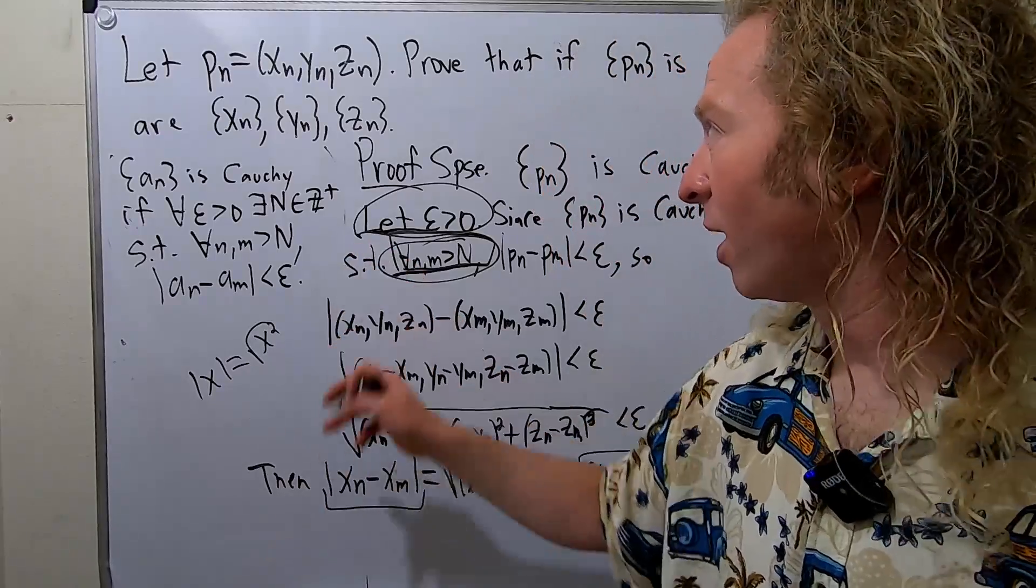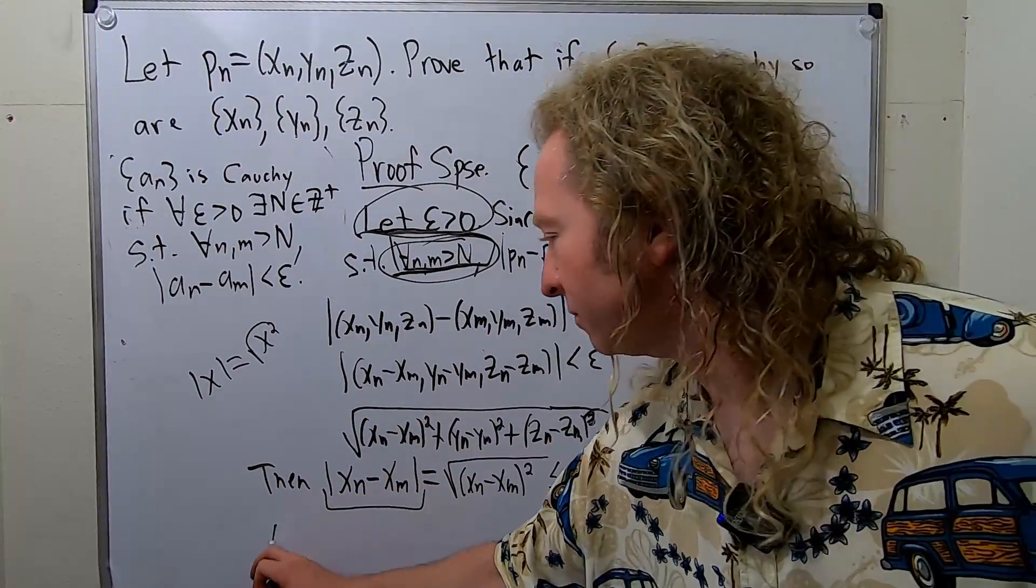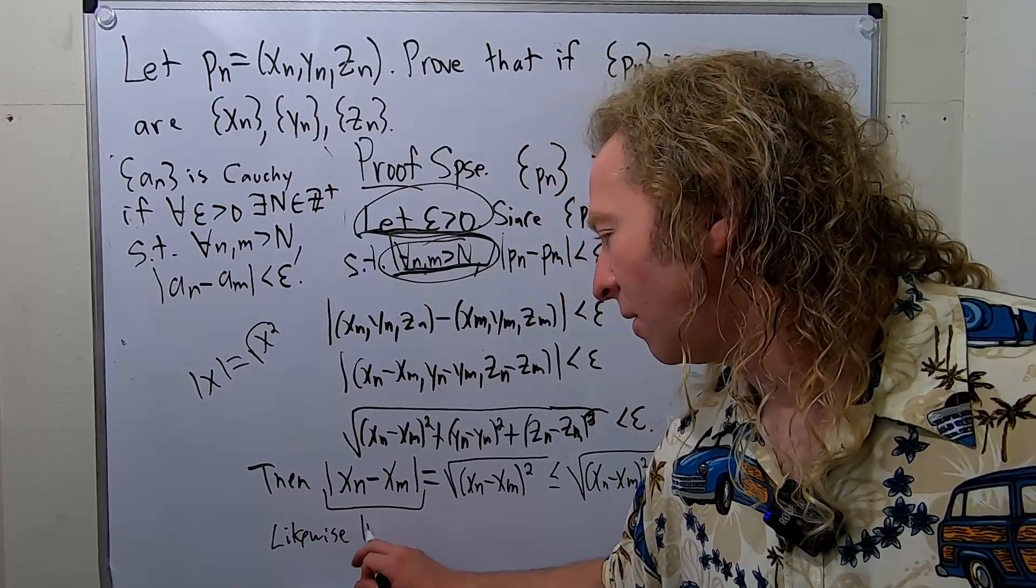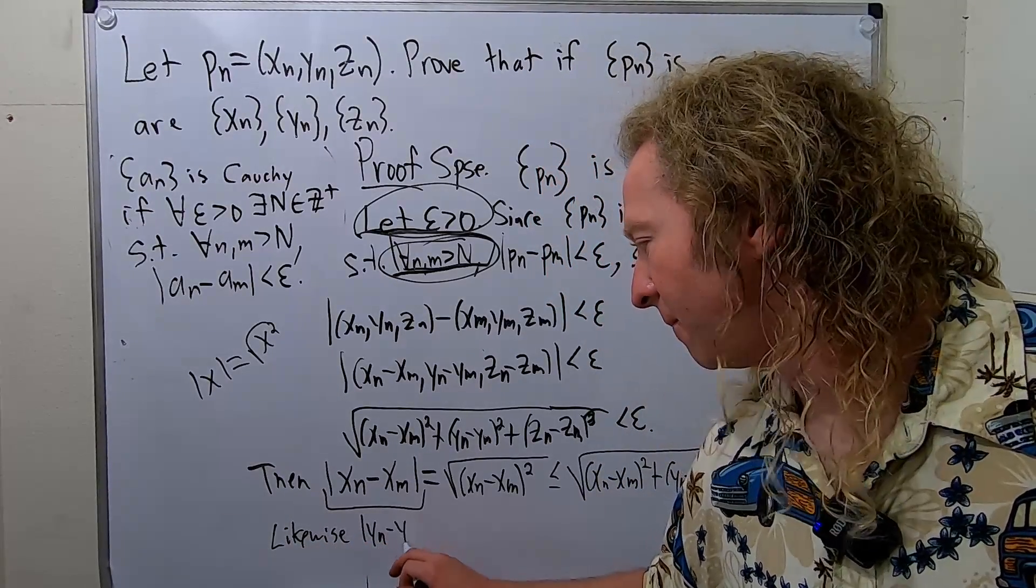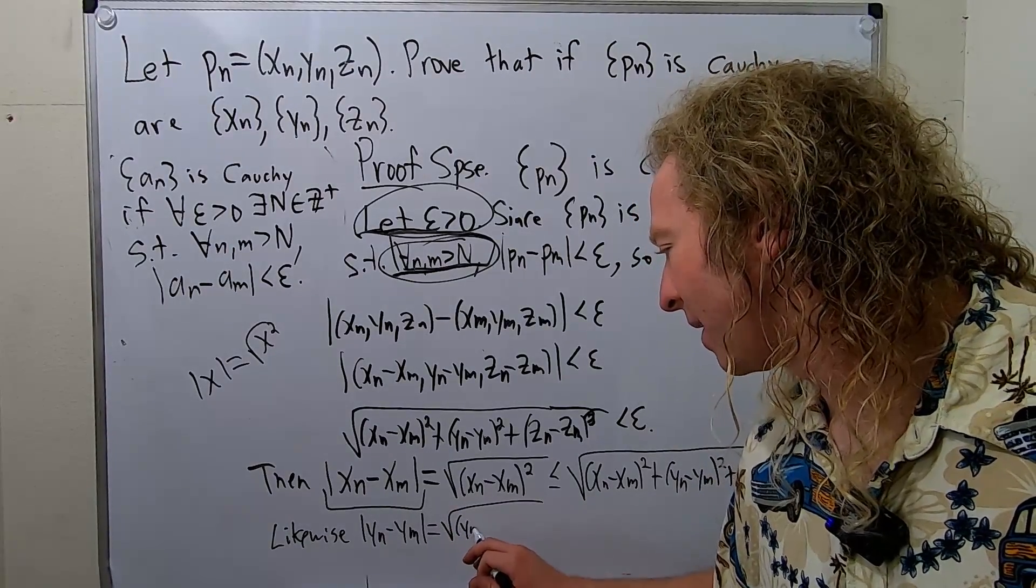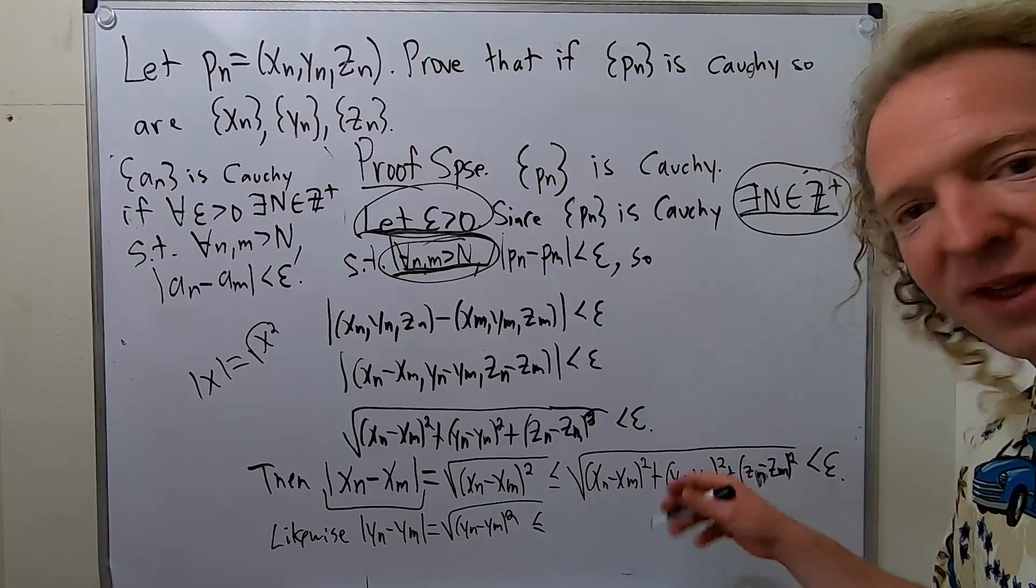Likewise, you can do the same thing for y. You could do... So I'll do it here. So likewise, Y sub n minus Y sub m is equal to the square root of Y sub n minus Y sub m squared. That's less than or equal to. Same thing. I'll just write it again.